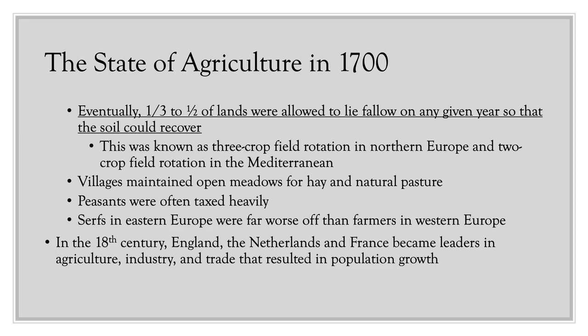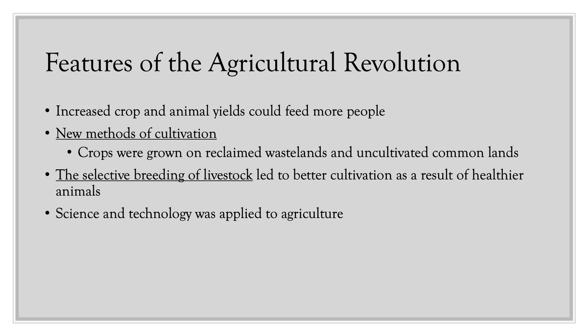Peasants were often taxed very heavily by their local lords, which exacerbated subsistence agriculture and made it very difficult for them to maintain any food or money reserves. This was always worse in Eastern Europe as serfdom was codified. But in the 18th century, England, the Netherlands, and France became leaders in agriculture, industry, and trade, resulting in population growth — and this is where we start to see some important changes. The 18th century features the Agricultural Revolution, actually the second agricultural revolution in human history.